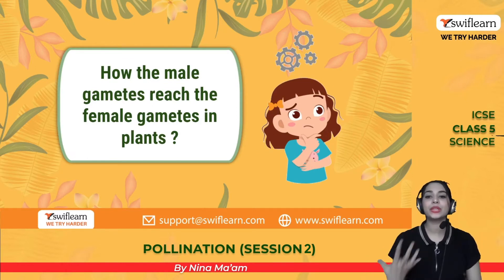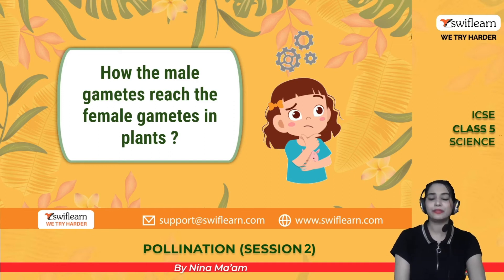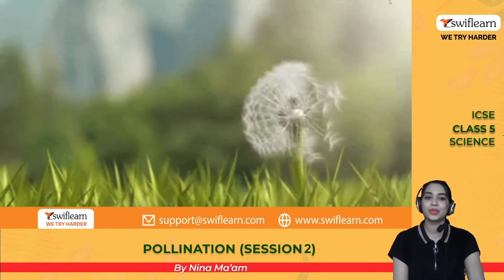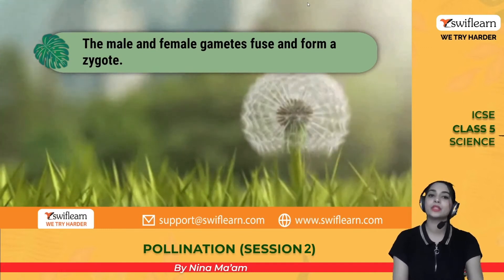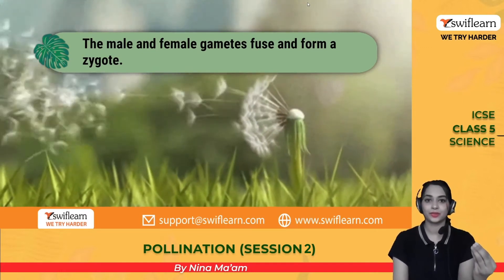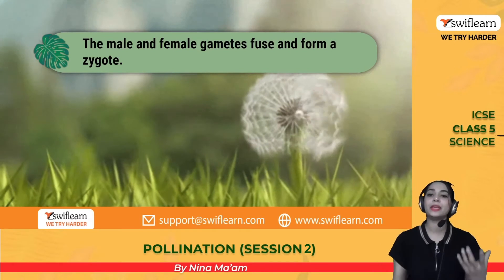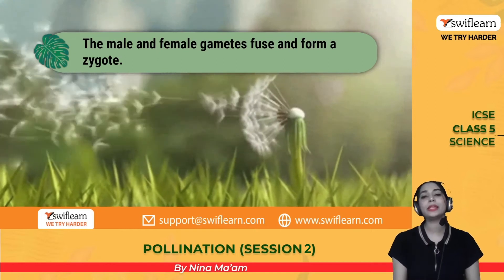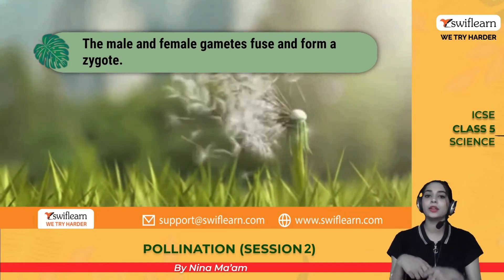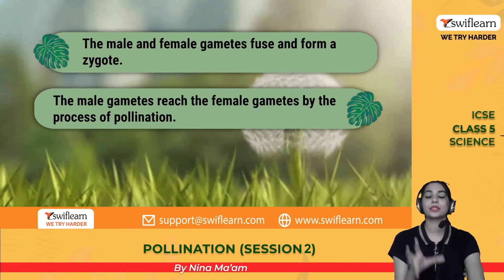How does the male gamete reach the female gamete in plants? Just like humans have both male and female genders, flowers also need a female gamete and a male gamete. They fuse together to form a zygote. The male gamete reaches the female gamete by the process of pollination. Now we are going to learn about pollination.